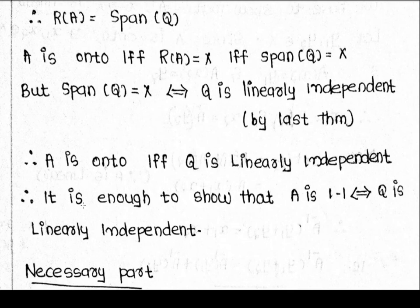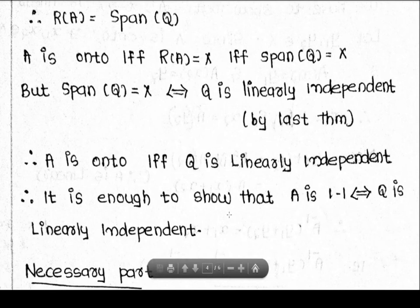A is onto if and only if {A(x1), ..., A(xn)} — call it q — is linearly independent. We will prove that A is one-to-one if and only if A is onto.